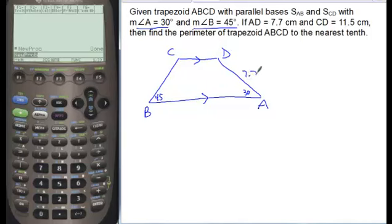Now after inserting those, I can fill in my measurements, 7.7 for AD, CD is 11.5.